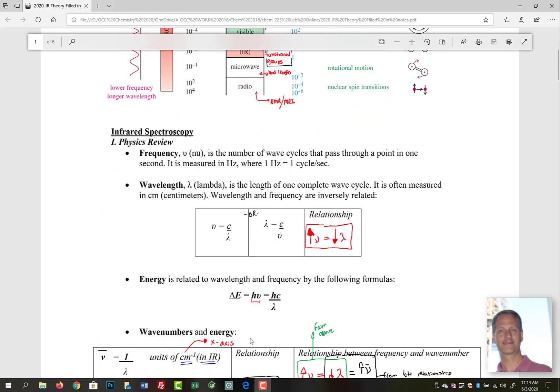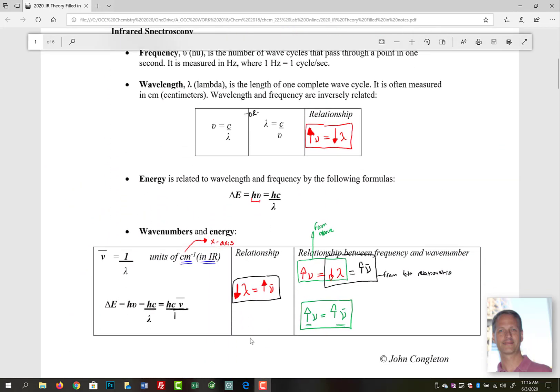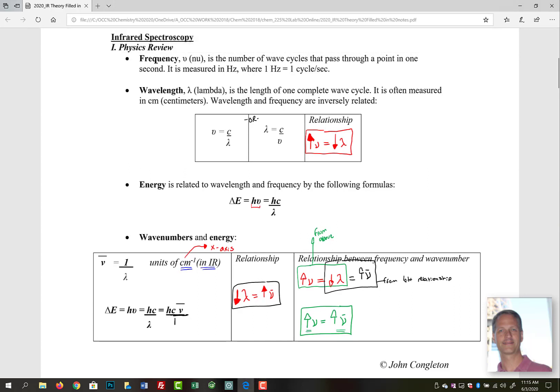Now a little bit of physics review. We have frequency and wavelength down here below, and they're inversely related by the following expression where c is our speed of light. An increase in frequency is a decrease in wavelength. Energy is related to wavelength and frequency by the formula: delta E equals h nu or hc over lambda, where h is Planck's constant.